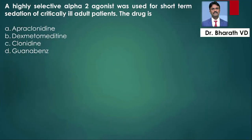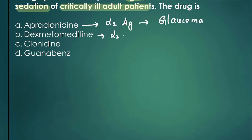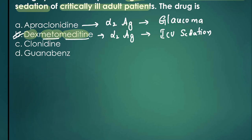The fifth MCQ: a highly selective alpha-2 agonist used for short-term sedation of critically ill adult patients — what is the drug? Apraclonidine is also an alpha-2 agonist, but it is used to manage glaucoma. Dexmedetomidine is the alpha-2 agonist used for ICU sedation of critically ill patients. The answer is option B, dexmedetomidine.